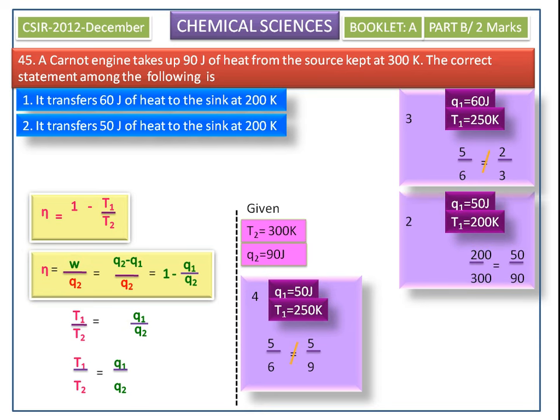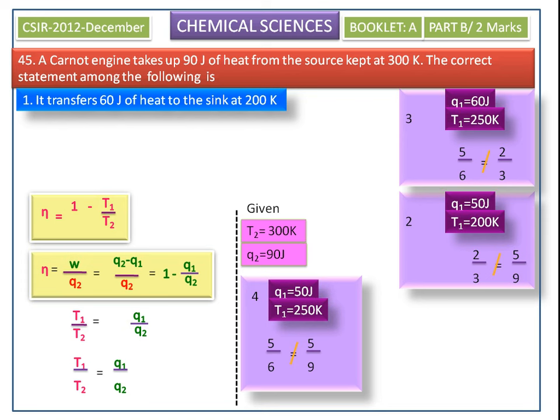Next we consider the second option. Substituting the values, we get 2/3 for T1 by T2 and 5/9 for Q1 by Q2. Since T1/T2 is not equal to Q1/Q2, the second option is also not the correct answer.